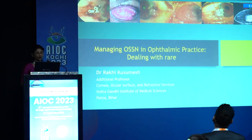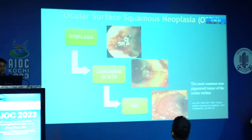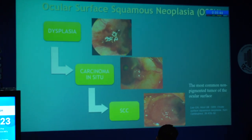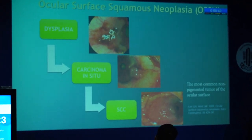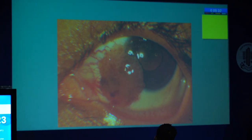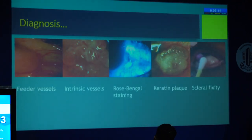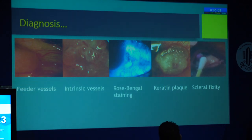I will be talking about management of OSSN in ophthalmic practice. OSSN is a term that includes all kinds of neoplasia of the ocular surface, from dysplasia to carcinoma in situ to squamous cell carcinoma. It is not very rare in our practice — it is one of the most common non-pigmented tumors of the ocular surface. Clinically it presents as a fleshy unilateral mass, though it could be bilateral or multifocal in some cases. Morphology ranges from gelatinous to leukoplakic to papillomatous or nodular or nodular ulcerative. We can identify these tumors with feeder vessels, intrinsic vessels, rose bengal staining, keratin plaques, and scleral fixity — an important test in each case.